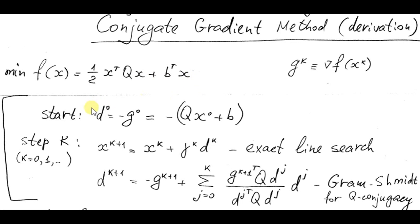At first iteration we go in direction of minus gradient at the original point x0. This is our first direction. Then we produce exact line search in this direction and compute new gradient and obtain new direction via Gram-Schmidt orthogonalization procedure.